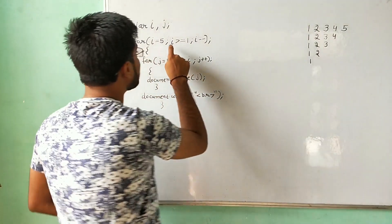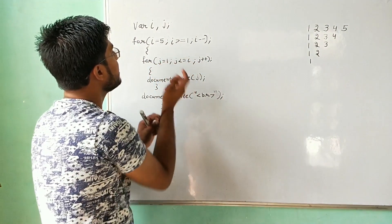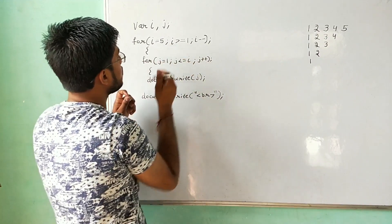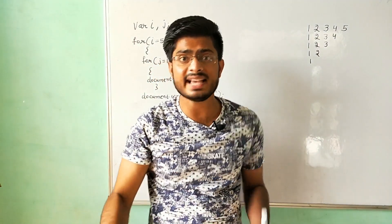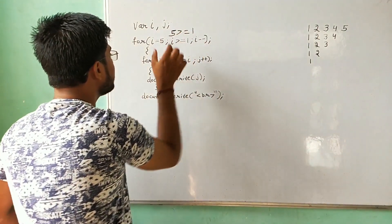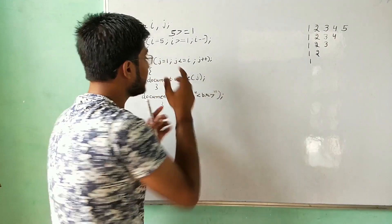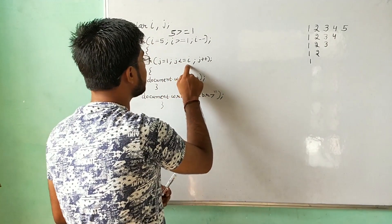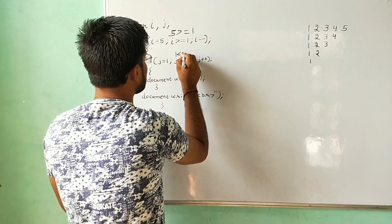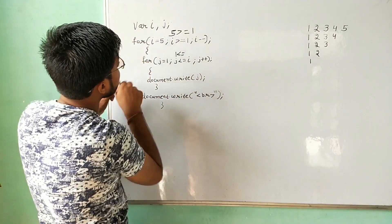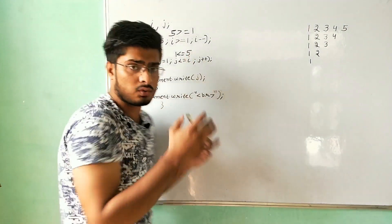Let us see the working. First of all, the condition is i greater than or equals to one. We have i as five, so it will check: is five greater than or equals to one? Yes, the condition is true. If the condition is true, it will go to the inner for loop. The inner for loop finds that j value is one, and again it checks the condition: is j less than or equals to i? J is one, and i is five, so is one less than or equals to five? Yes, the condition is true.